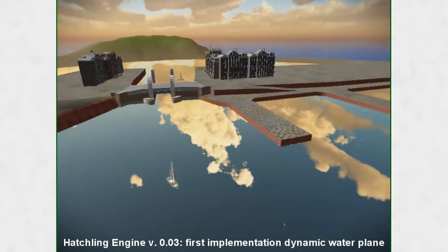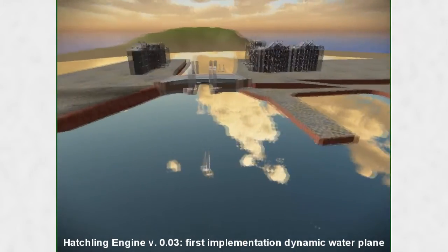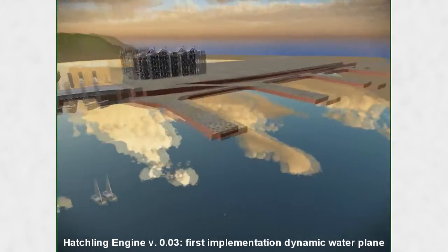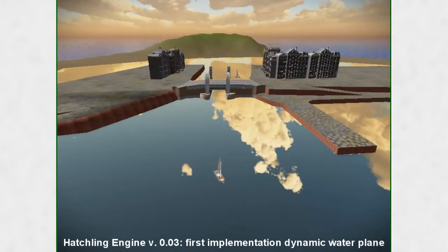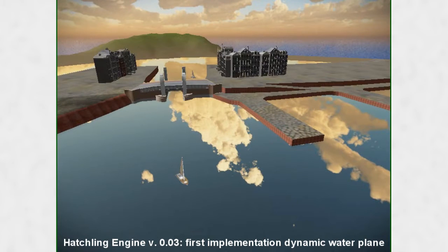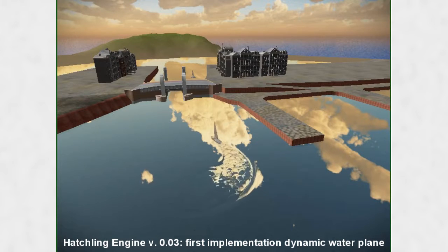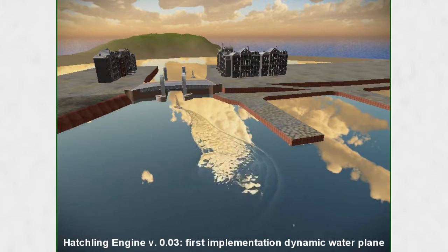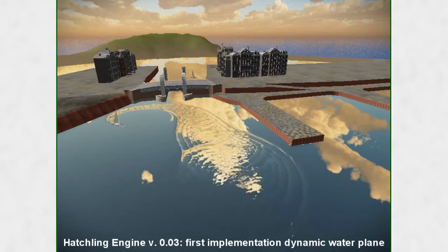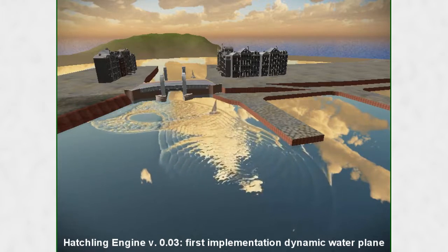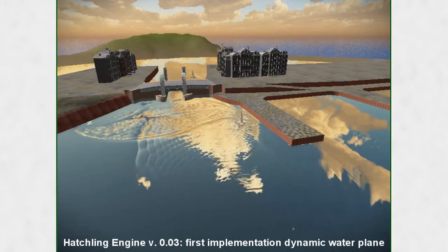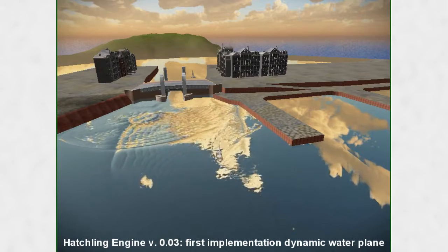So we want to have an open world that encompasses the entire center of Amsterdam, which is about 5x5km. As you can understand, we need an engine that can support open and dynamic worlds without any loading times.